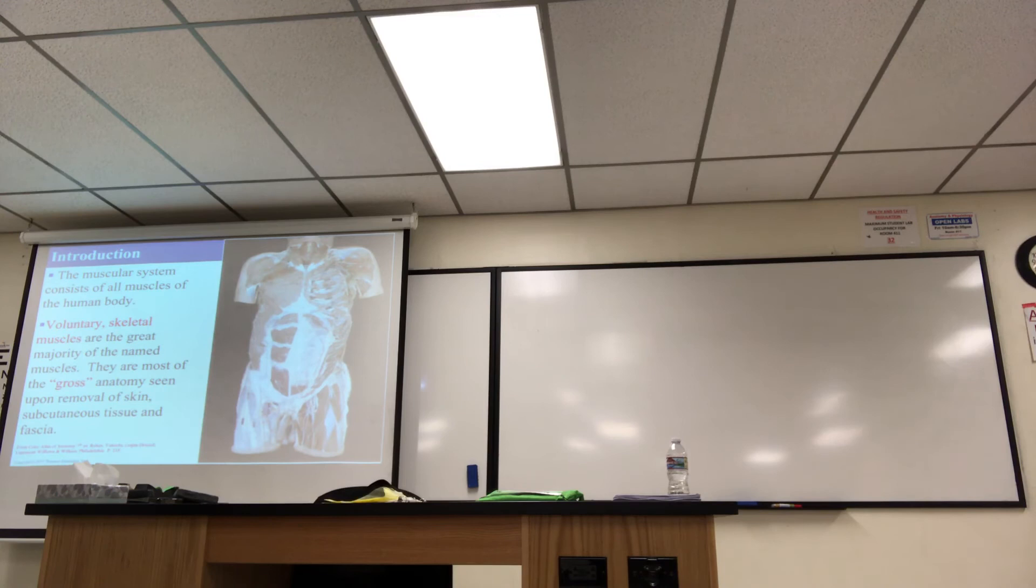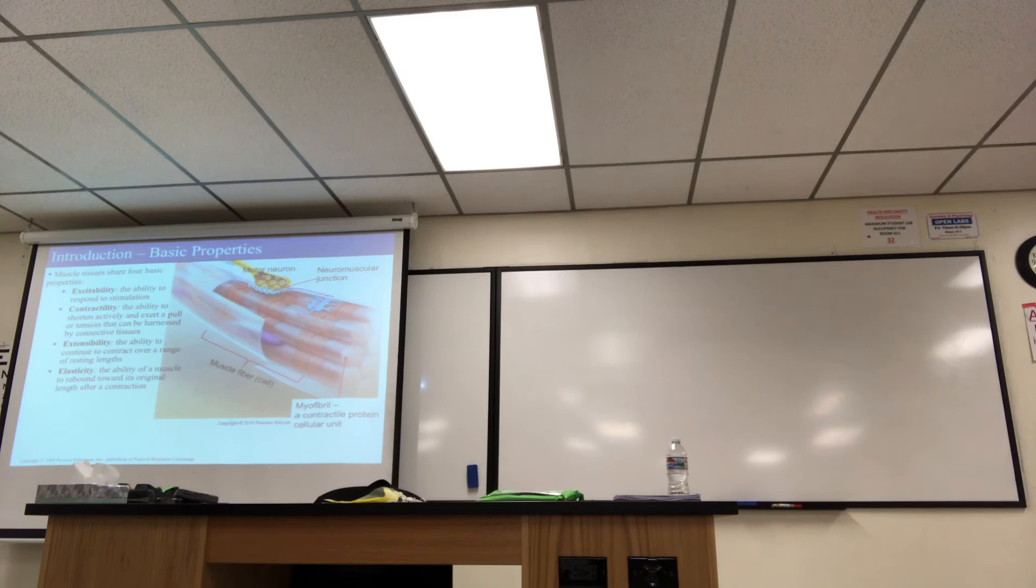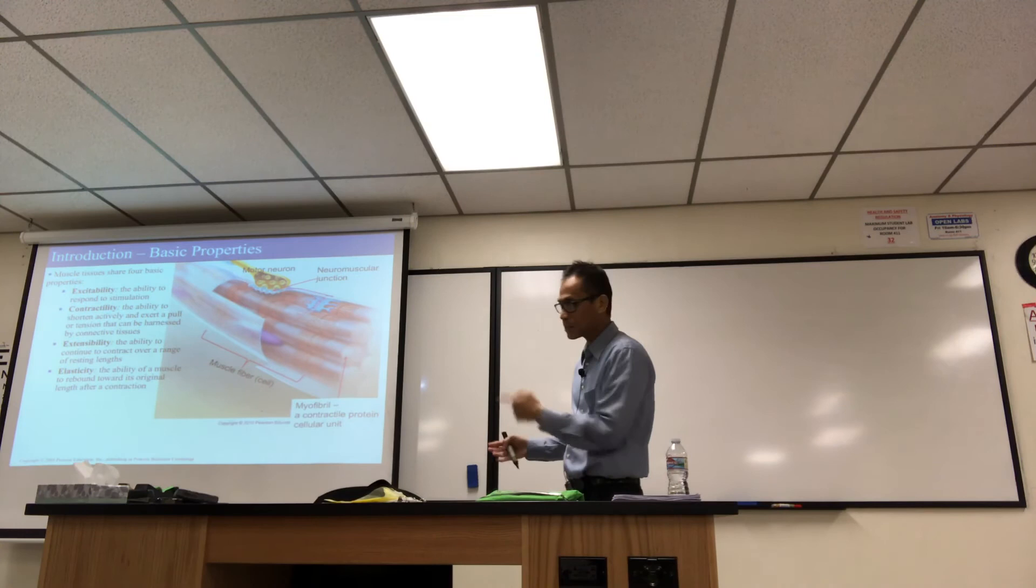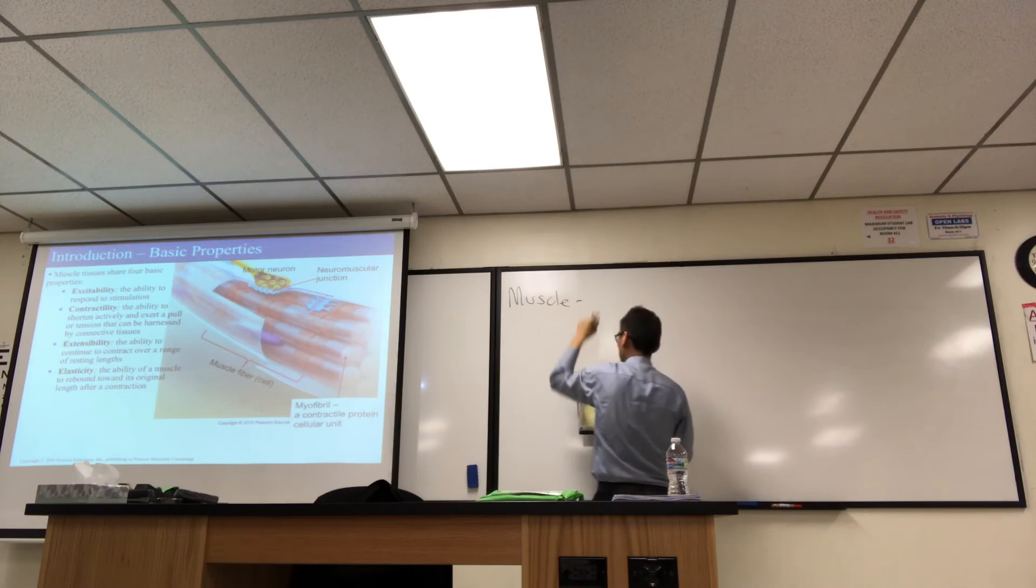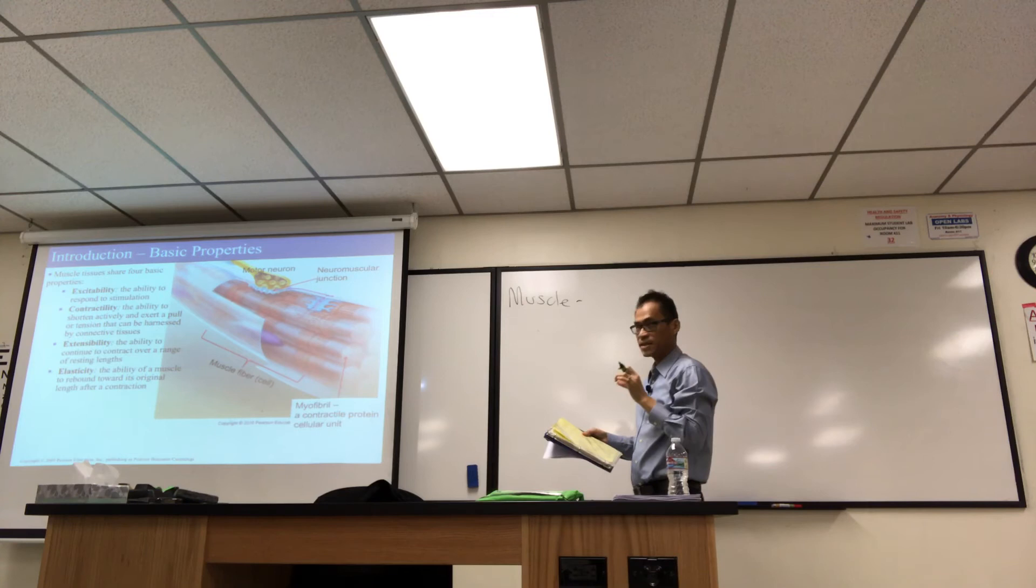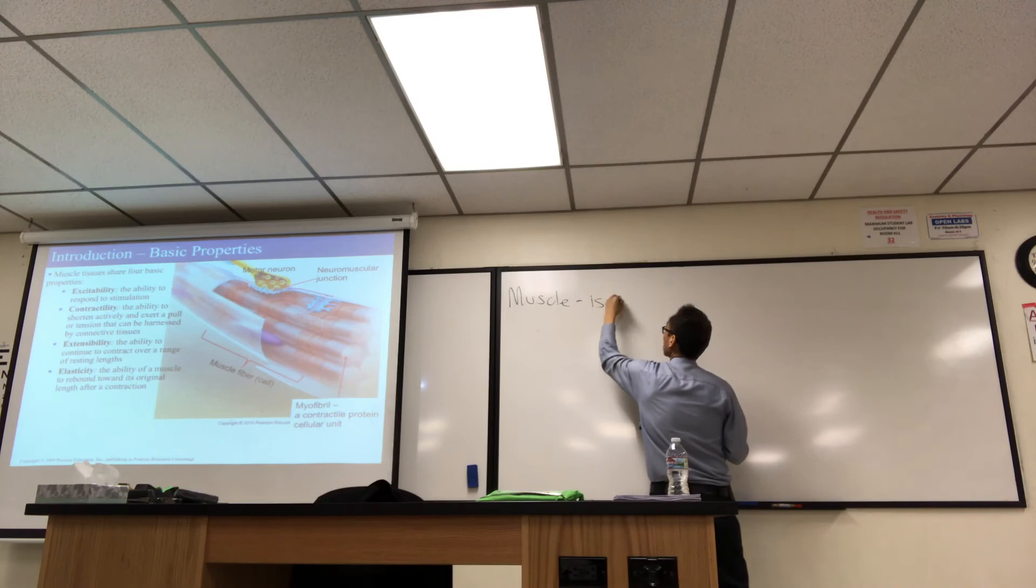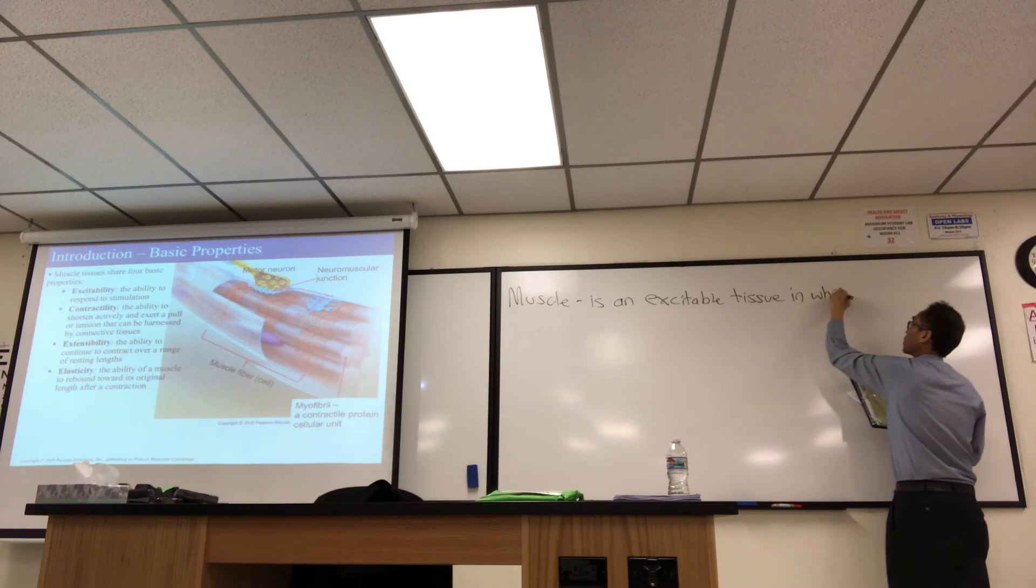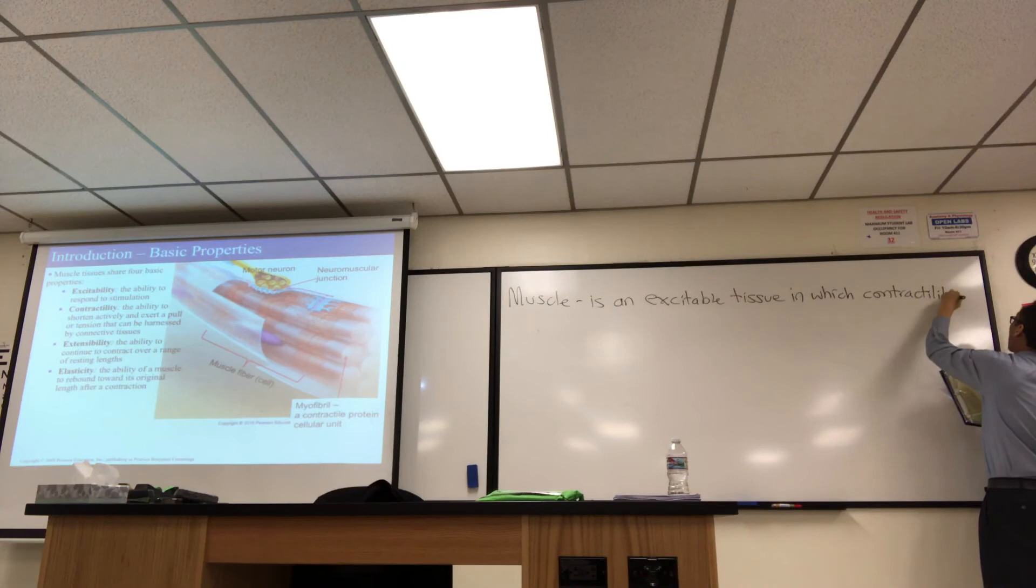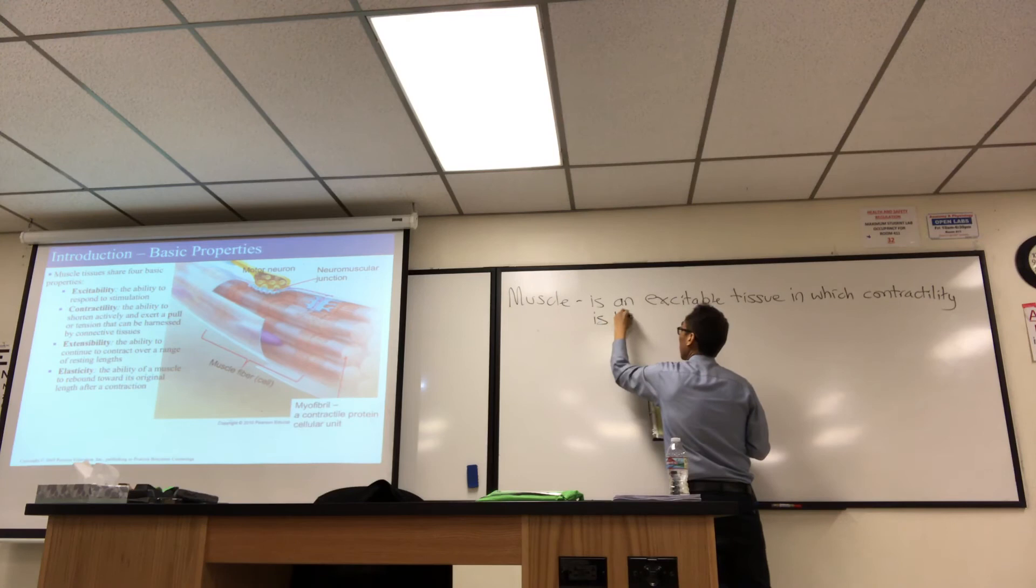Well, anyways, here's a picture of the basic principles of a nerve stimulating a muscle fiber to contract. And this is kind of where I want to get into the characteristics of muscle tissue. So next chapter, muscle. So what we're going to learn is that muscle is an excitable tissue in which contractility is highly developed.